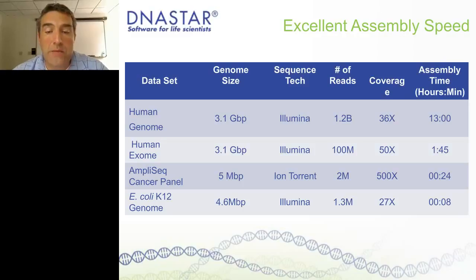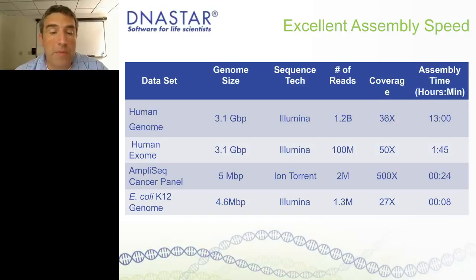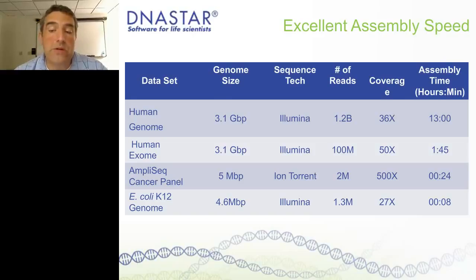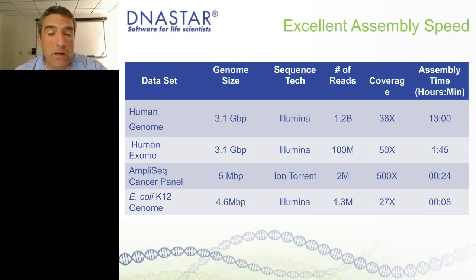A 50x coverage human exome takes about a couple of hours. Things like cancer panels or microbial genomes, we measure those in minutes. So smaller data sets are very, very quick, and that means you can run a large number of samples on fairly modest hardware.